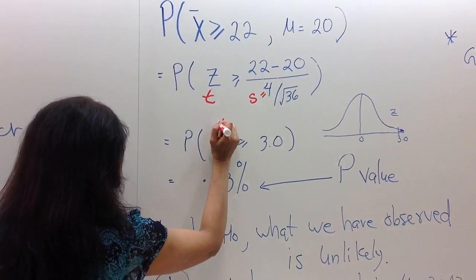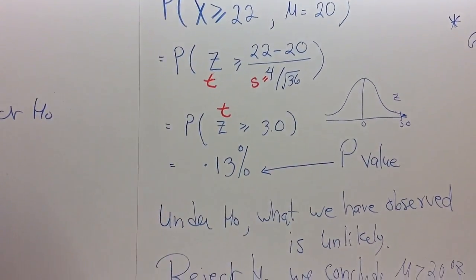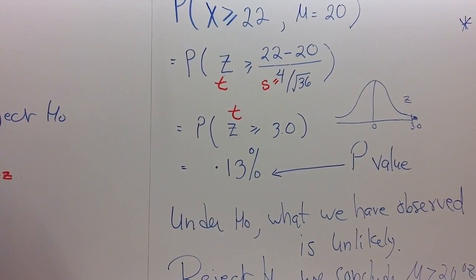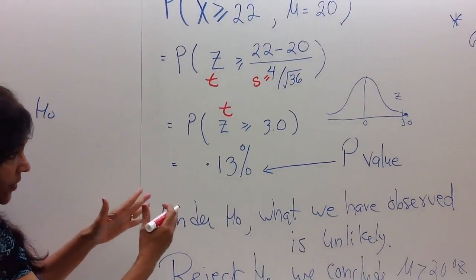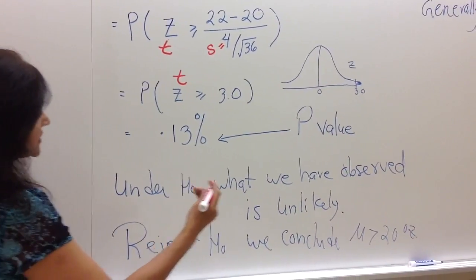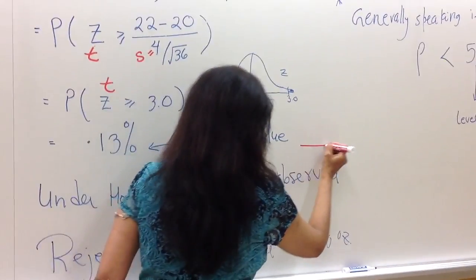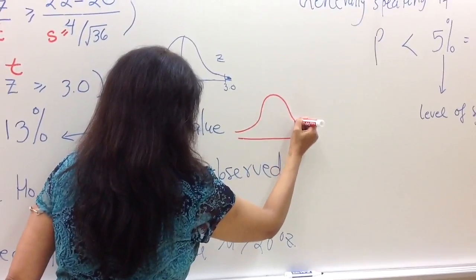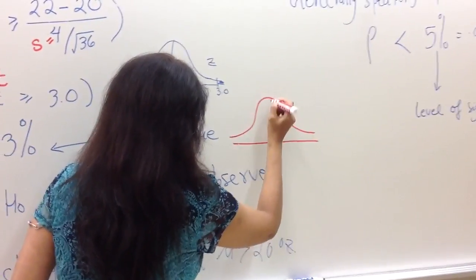So now the question is, what is the probability that a T score is bigger than 3? And that means we will now read the T table. The T graph is very similar to a Z graph, folks, although the actual shape depends on the sample size.